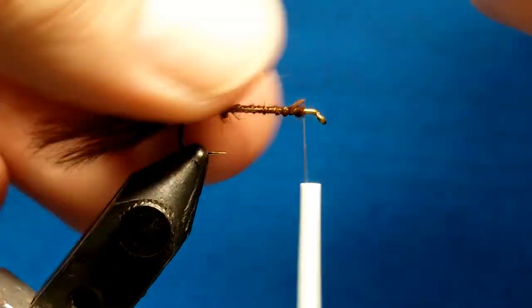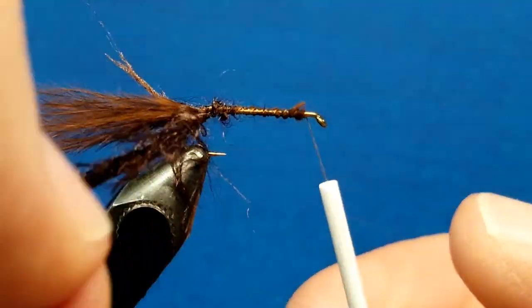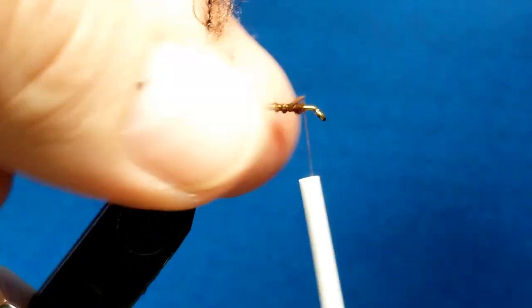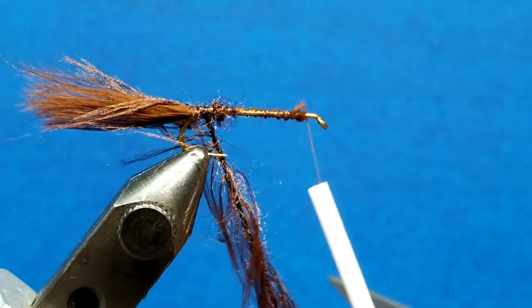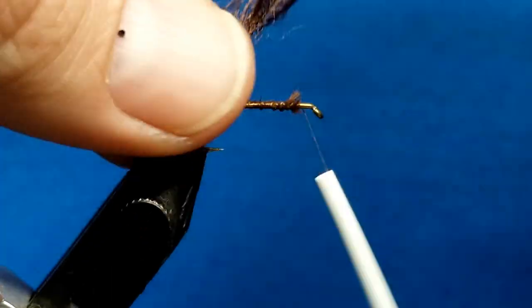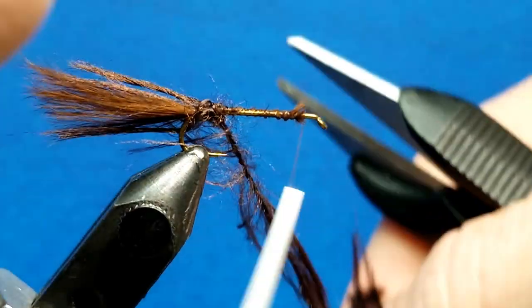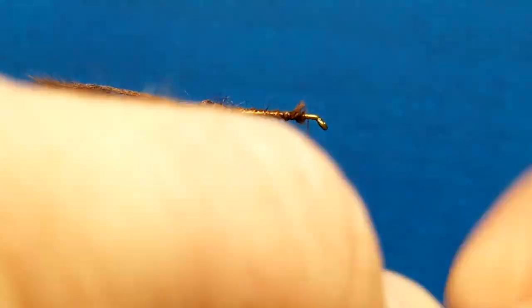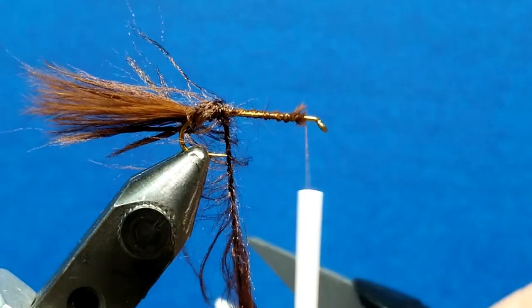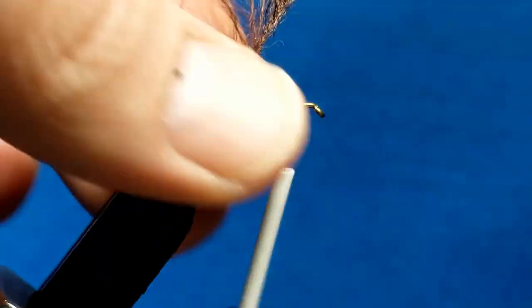As I wrap this forward I want to make sure that I lay down side by side wraps, starting right there at the bend. Once I get that first wrap down I'm just going to make sure that I run my fingers and pull those fibers back every time I take a wrap. If it gets a little trapped it's all good, we can hit it with the wire brush right at the end. But I do want to free up as much of that material as possible.